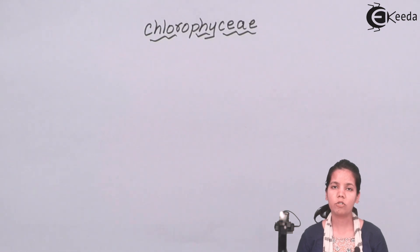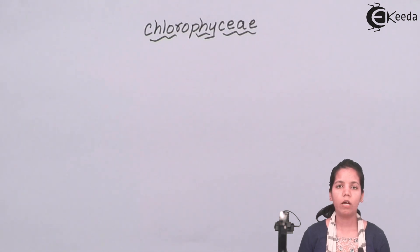Two different types of reproduction can be seen in this type of algae. One is vegetative reproduction, or asexual reproduction, and the other form is sexual reproduction. In sexual reproduction, production of gametes takes place, and these gametes are isogametes, anisogametes, or zygogametes — all different types of gametes are formed for reproduction.